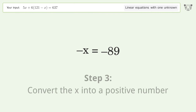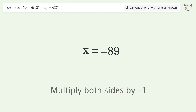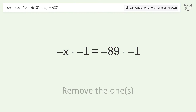Convert x into a positive number by multiplying both sides by negative one. Remove the ones.